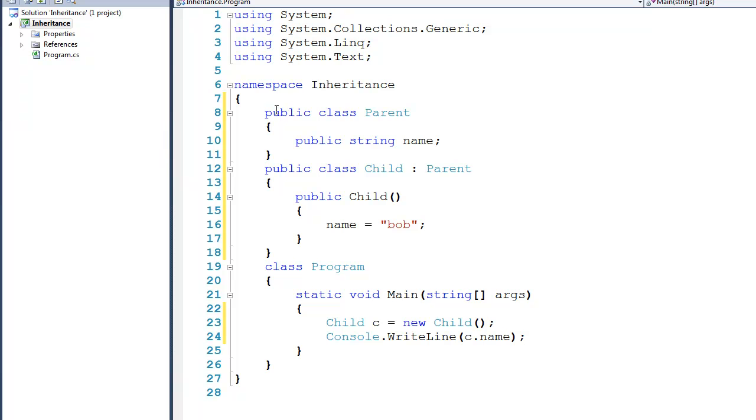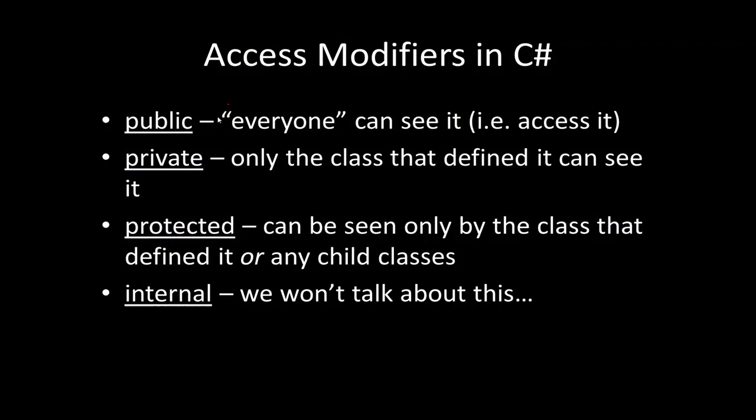At this point we need to have a meaningful discussion of the word public and also have a discussion about other access modifiers. When we talk about access modifiers in C#, there are really only four. The first one is the keyword public, and essentially this means that everyone can see it — you can access it from just about anywhere in the code. Then we have the word private, meaning only the class that defined the attribute or method can actually access it.